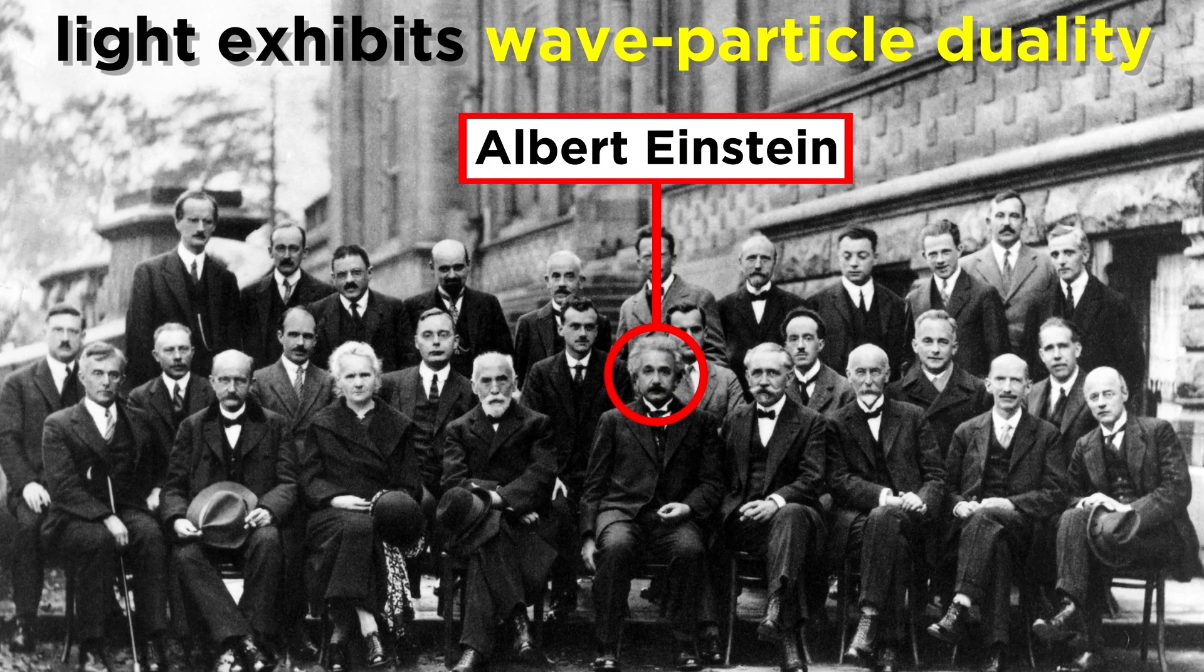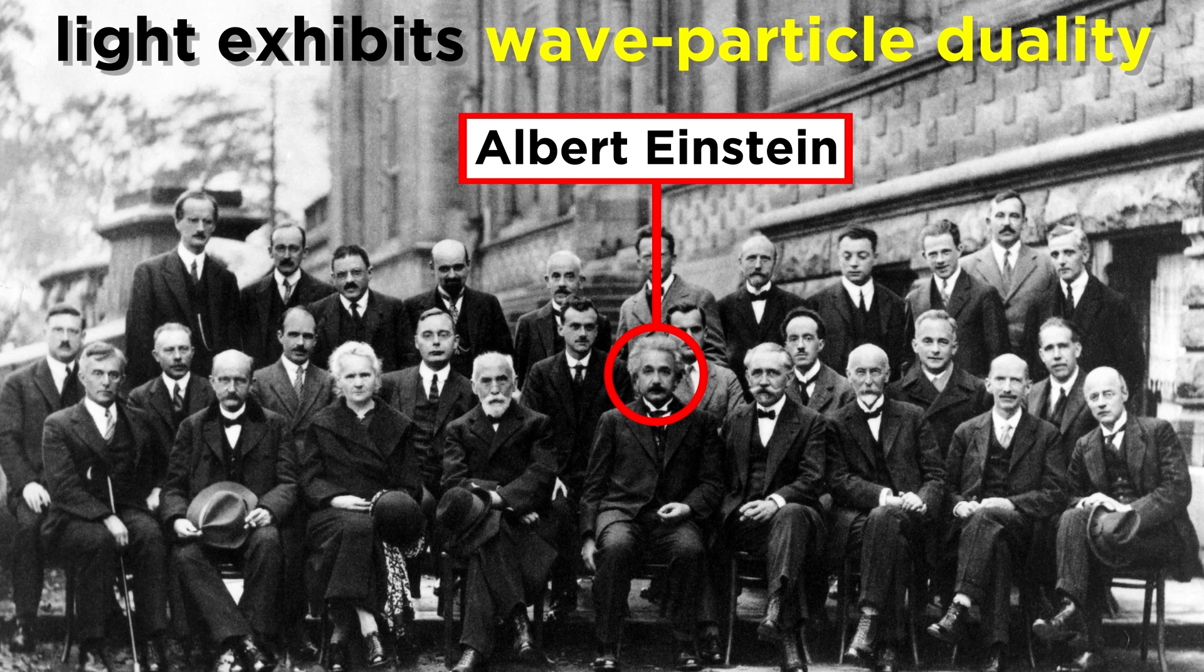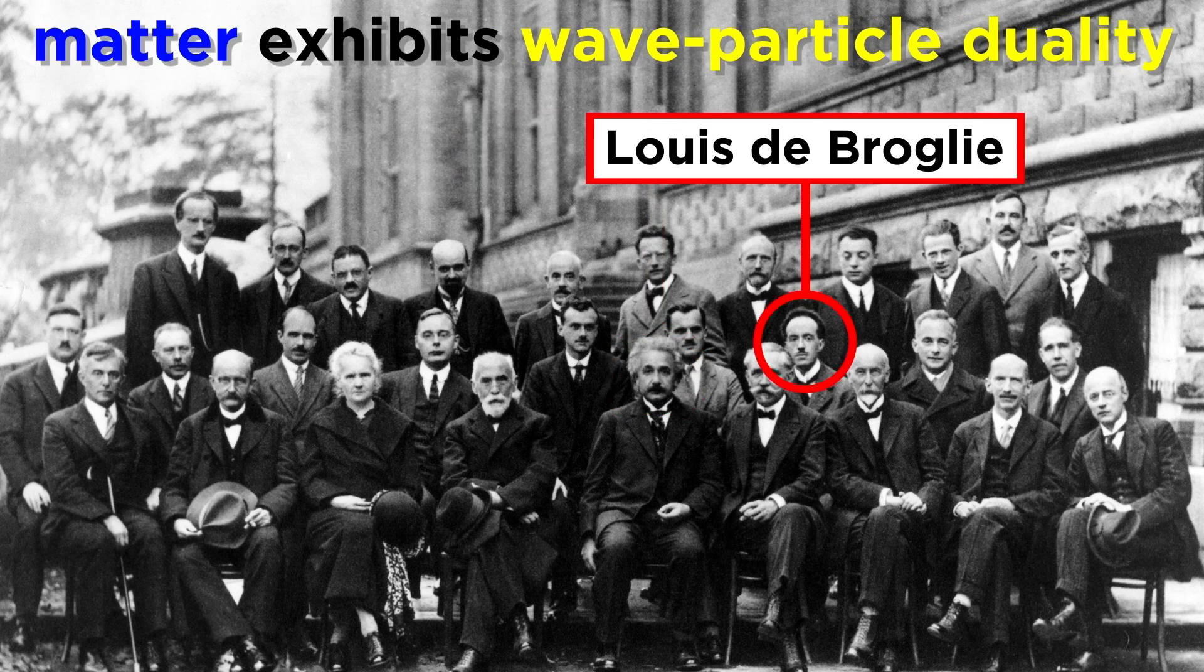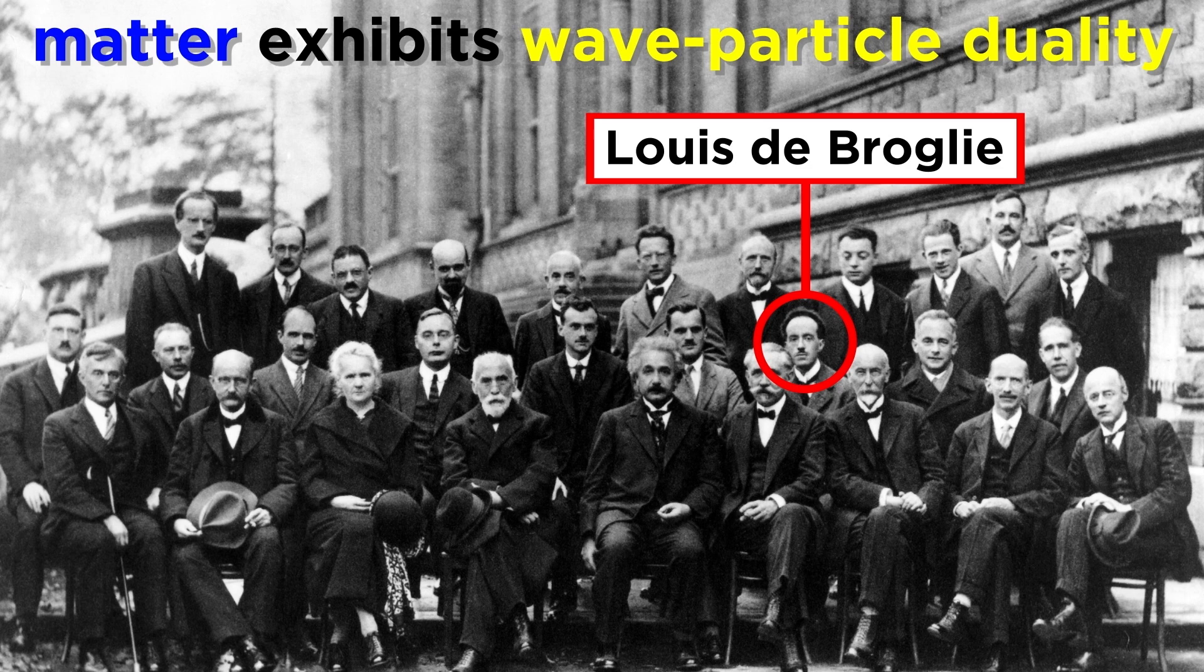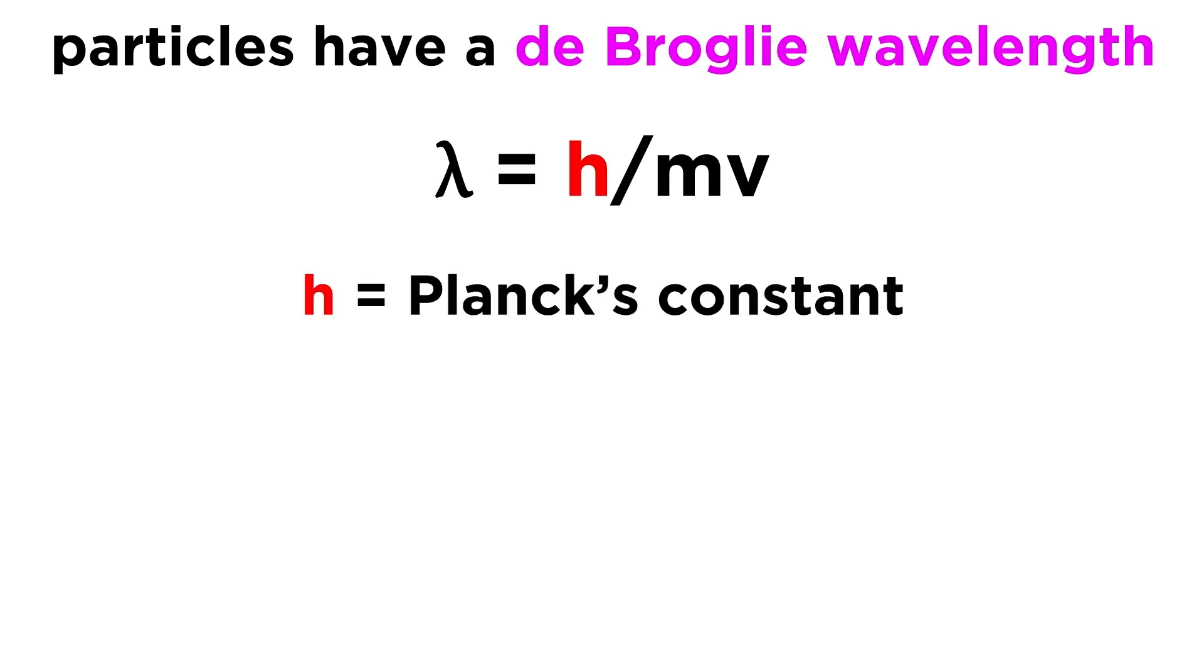Through Einstein and the photoelectric effect, we first came to understand that light exhibits wave-particle duality, but this idea was extended further by Louis de Broglie, who proposed that it's not just waves that can behave like particles, but it is also the case that particles can behave like waves. This means that all matter must have a wavelength, which is called the de Broglie wavelength, and it is given by the following equation involving Planck's constant, as well as mass and velocity.